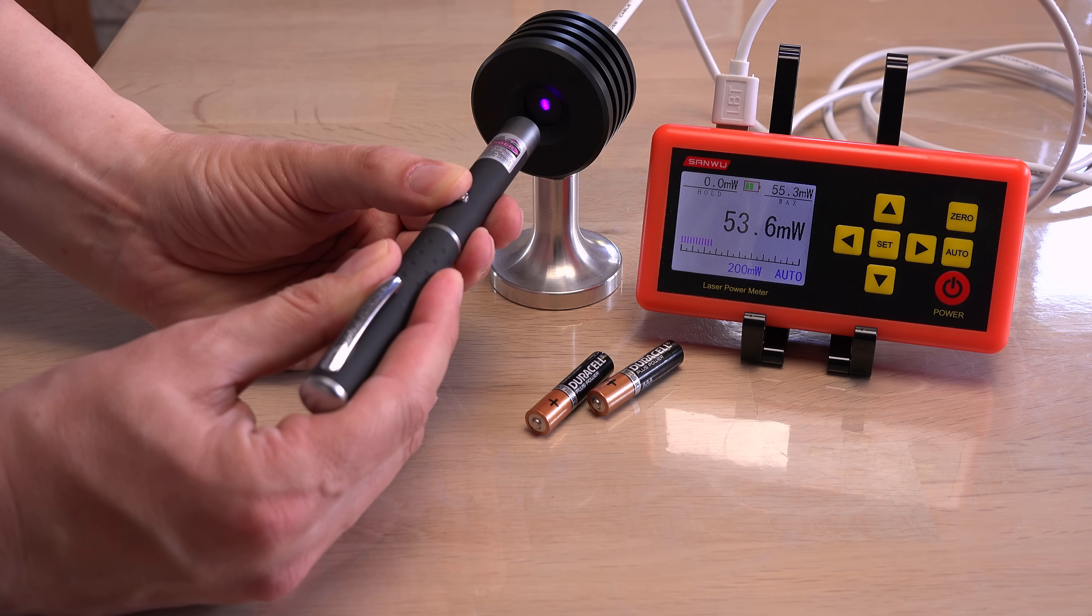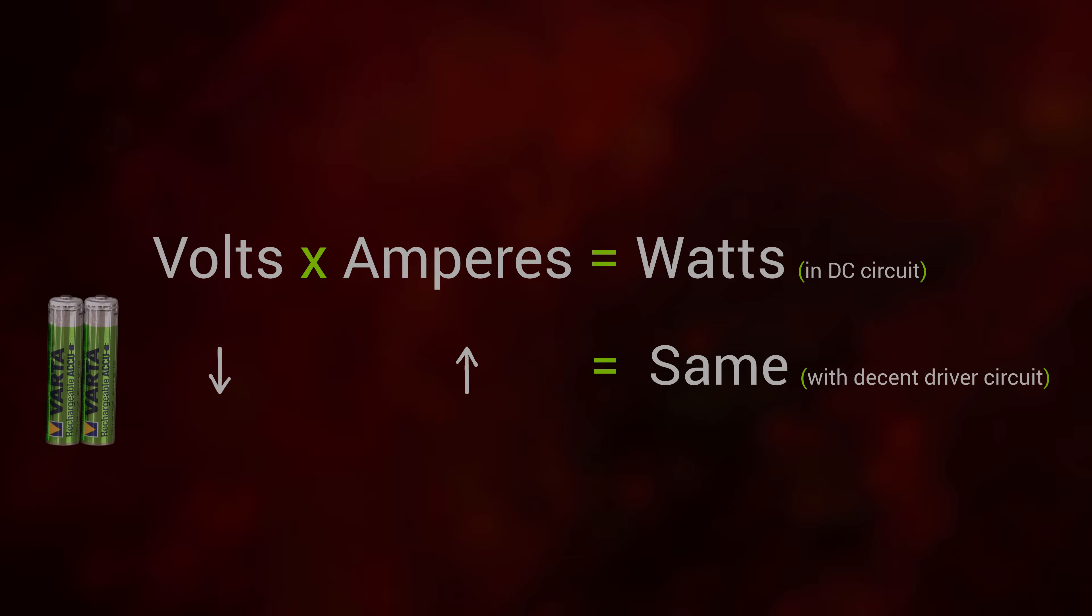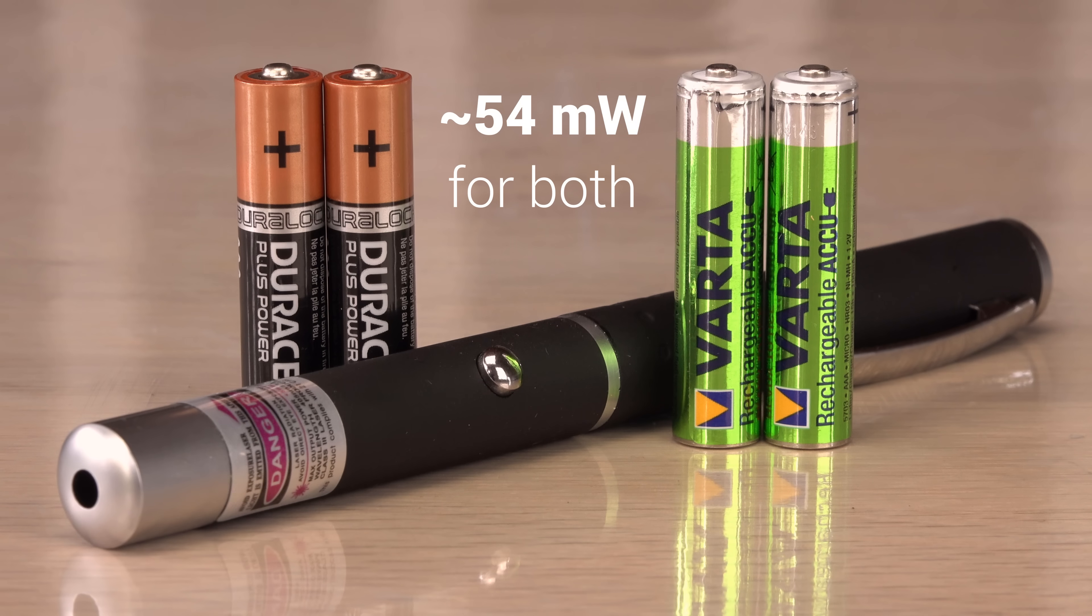Around 54 milliwatts, basically the same power output since voltage is only half the story. Voltage and amperage combined to watts is what counts. The old CR2 batteries are low on both voltage and amperage. The freshly recharged batteries may be low on voltage but not on amperage. So no, using rechargeable batteries will not make a laser pointer safer by lowering its power.